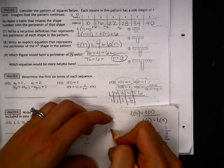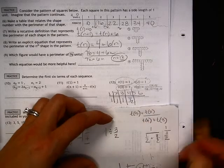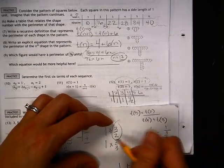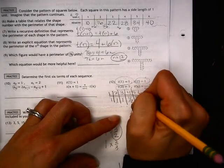1 divided by 3 halves is the same thing, and 1 times 2 thirds is multiplying by the reciprocal, which gives me 2 thirds as your answer.